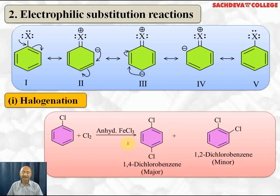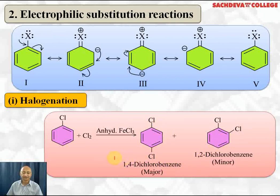The electrophile in this case is Cl⁺. Cl₂ reacts with FeCl₃ to form FeCl₄⁻ plus Cl⁺ as the electrophile. Cl⁺ replaces H⁺ from the para and ortho positions. Ortho and para products are formed together, but para is formed to a greater extent because there is less steric repulsion between the chlorine substituents, making the para isomer more stable.